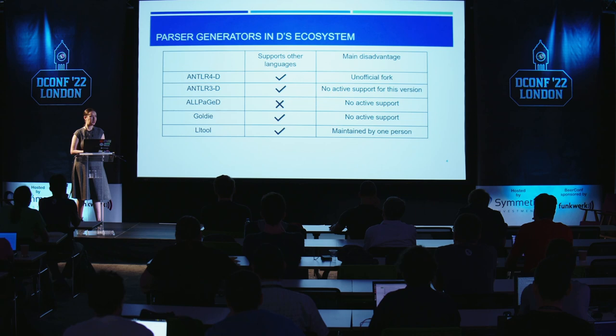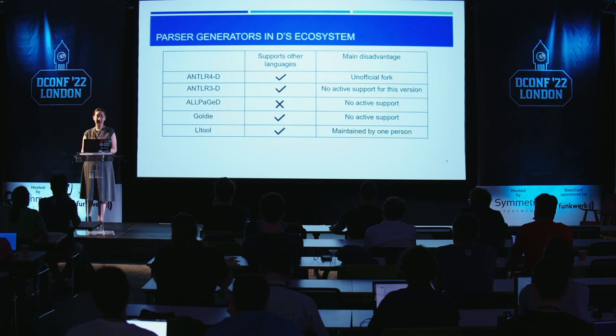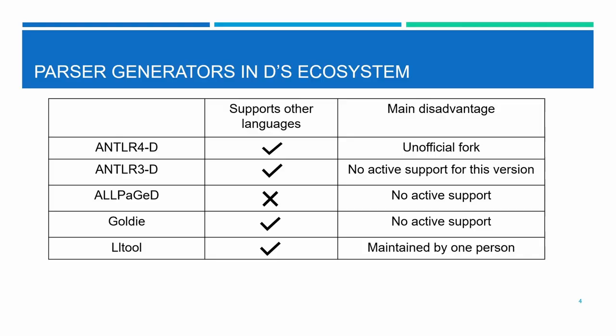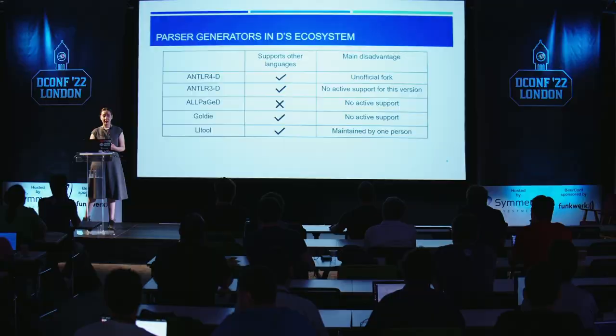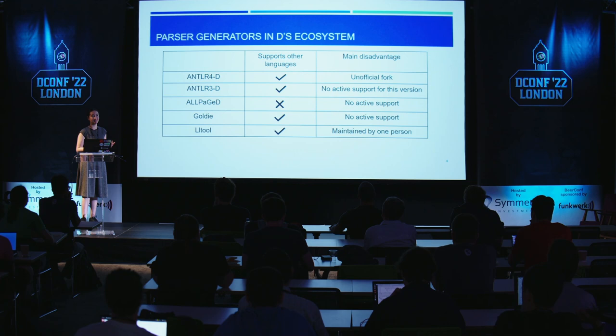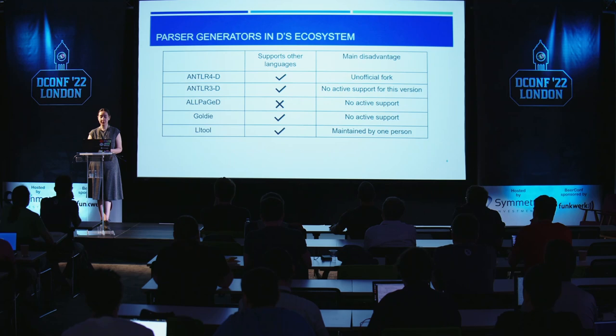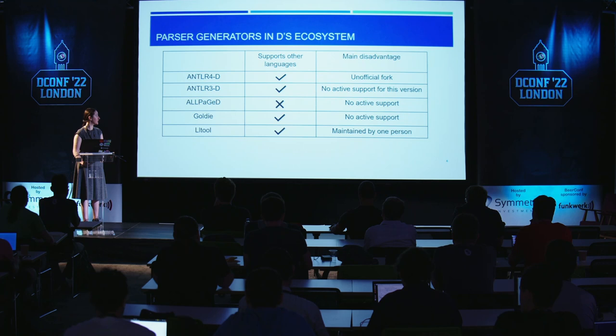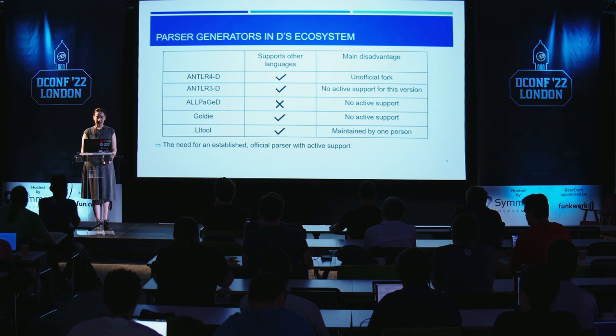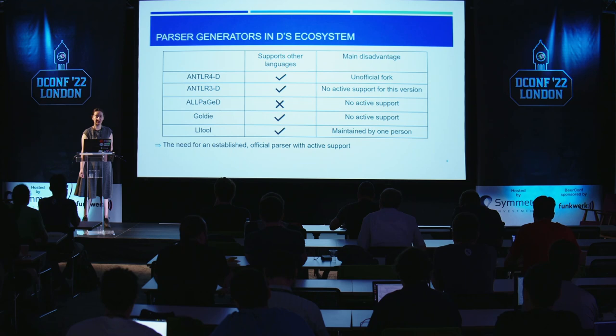I'm not the first person to present a parsing solution for the D language, so let's look at the state of parser generators in this ecosystem. For ANTLR, the latest version ANTLR 4 supports D in an unofficial fork because the tests are not introduced in ANTLR's test suite. ANTLR 3 had active support but it's not supported anymore. Most other generators have lost support over time, and LL2 — also presented at this conference — has a single point of failure, maintained by only one person. I identified the need for an established, official parser with active support. Outside of Goldie, all of these parsers implement LL algorithms, so left-to-right, left-most derivation. From the perspective of attracting new D users, it's also easier to convince someone to try one new technology rather than two — it's easier to convince them to try D when they can still use the parser of their choice.